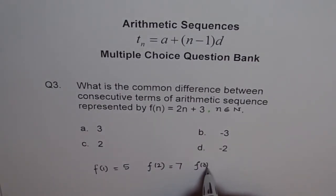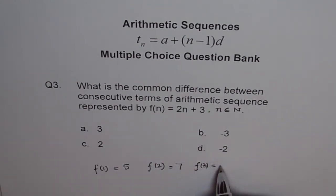f of 3 will be 3 times 2, 6. And 6 plus 3 is 9. And f of 4 will be 4 times 2, 8, 8 plus 3, 11. So we get a sequence, 5, 7, 9, 11.